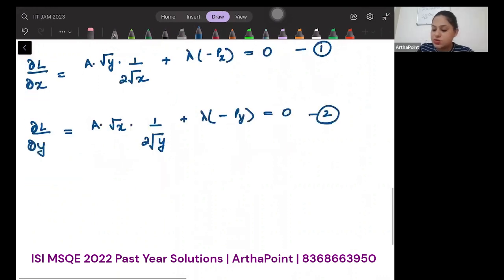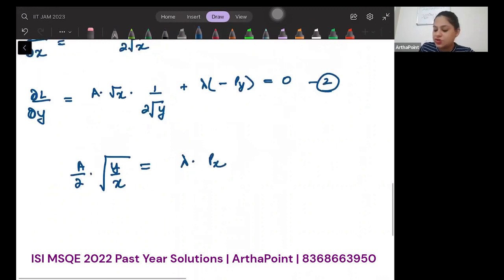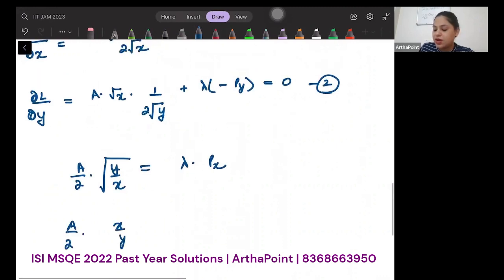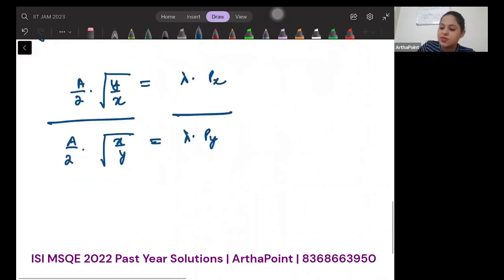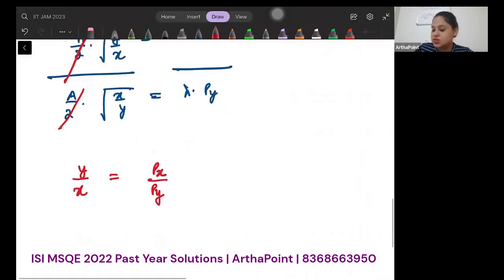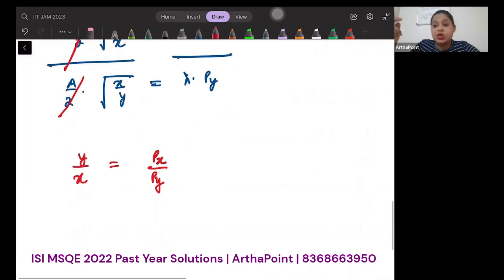So when you divide, just solve these equations: a/2 · √(y/x) = λ·px, and the other equation is a/2 · √(x/y) = λ·py. Then you will just divide these two equations. You are going to get y/x = px/py.